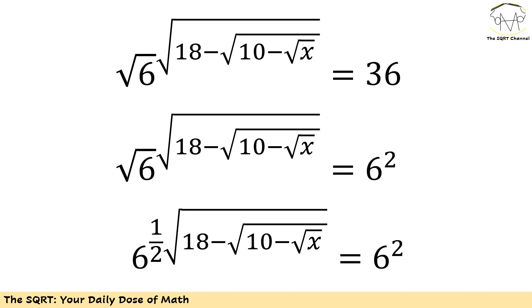On the left hand side I will have 1 over 2 times radical 18 minus radical 10 minus radical x for the exponent and on the right hand side I have 2. Obviously, these need to be equal.